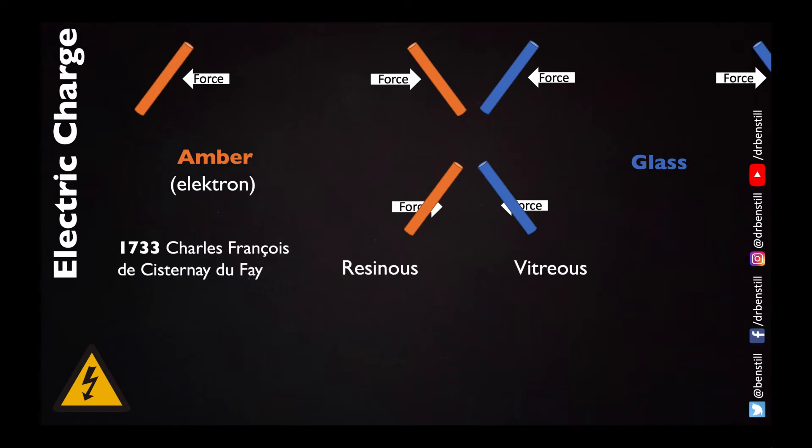In 1733 Cisternae de Fay in France named these two different types of electricity from the amber electron: resinous and vitreous.